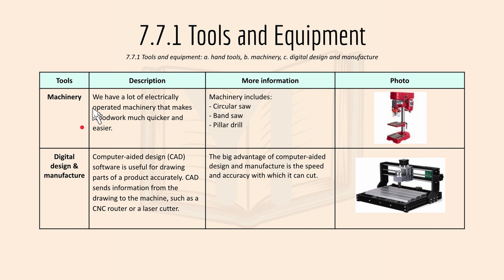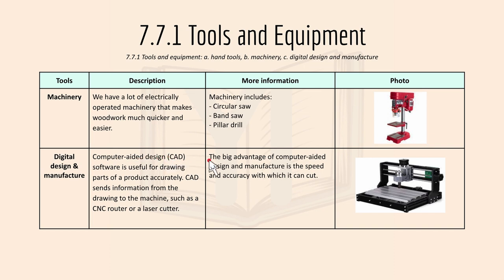Then we have machinery. We have a lot of electrically operated machinery that makes woodwork much quicker and easier. The machinery includes circular saw, band saw, and pillar drill. For digital design and manufacture, computer aided design or CAD software is useful for drawing parts of a product accurately. CAD sends information from the drawing to the machine, such as a CNC router or a laser cutter. The big advantage of computer aided design and manufacture is the speed and accuracy with which it can cut. Here's a photo of the CNC router machine.